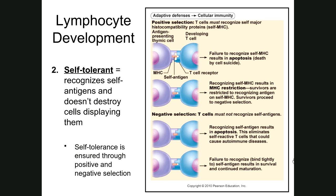The other thing a T or B cell has to do as it's developing in the thymus or bone marrow is ensure it's self-tolerant. With immunocompetence, the cell sprouted a receptor of a specific shape that allows it to bind to something like a lock and key. We need to make sure through the self-tolerance check that what the cell's receptor binds is not your own self-antigens — because if it is, it would destroy cells displaying your self-antigens. There's a two-step process that ensures self-tolerance.